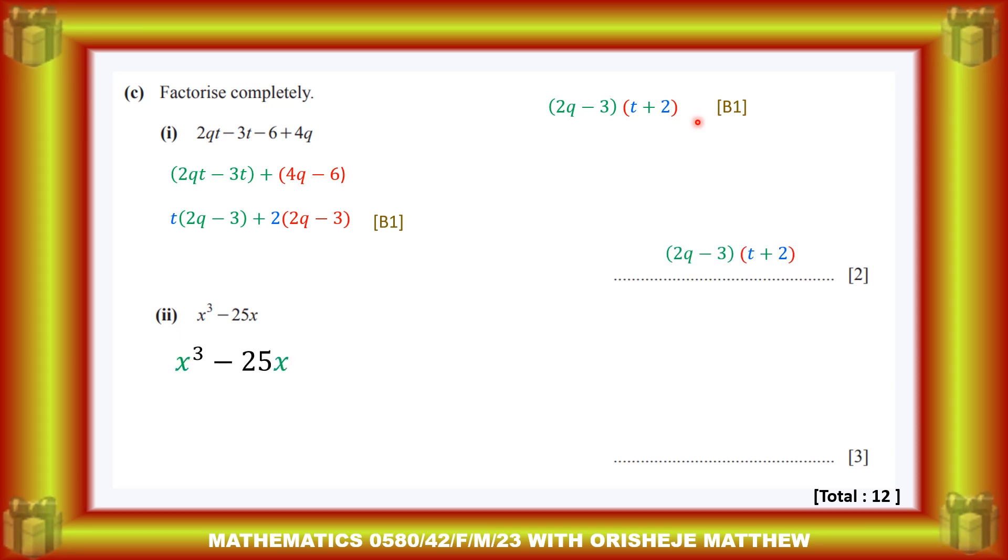Now let's look at the other one: x³ - 25x. x is common, so x will come out, so we have x(x² - 25). x² - 25 is difference of two squares. So that will become x times difference of two squares: x² - 25, same thing as (x - 5)(x + 5). So with that, we finish up the factorization, the 12 marks for this question 5.